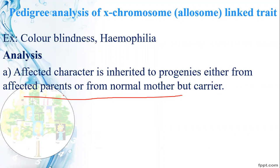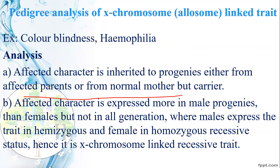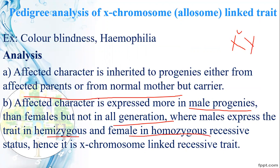In autosomal-linked traits, the affected character is expressed more in male progenies because males are hemizygous — they have one X and one Y chromosome. For example, in color blindness, if the X chromosome carries the recessive allele, it will be expressed in males. Males express the affected character more than females, and males express the trait in hemizygous or homozygous recessive state. This is an X chromosome-linked recessive trait.